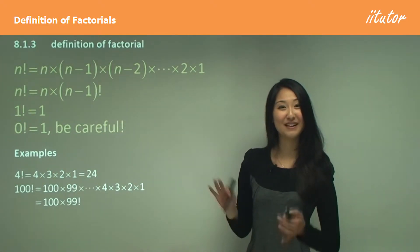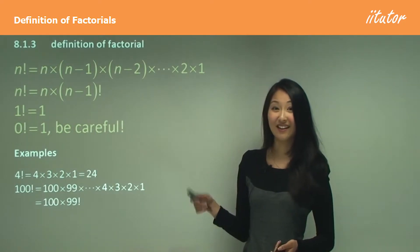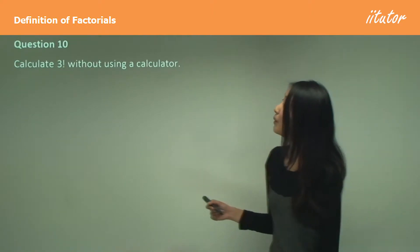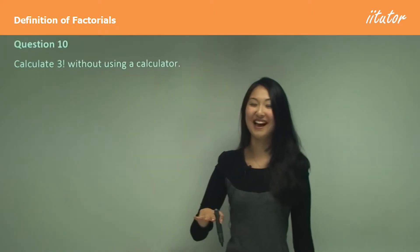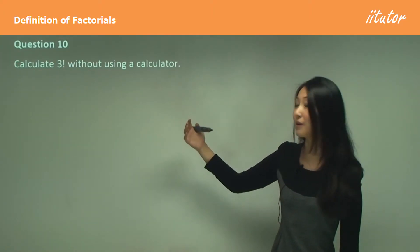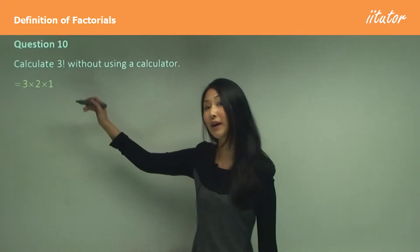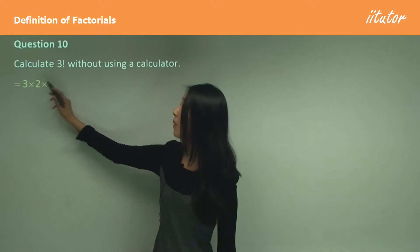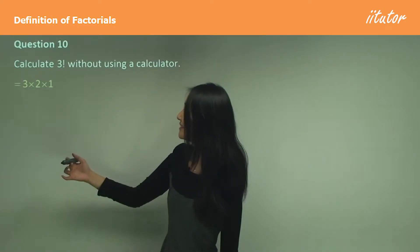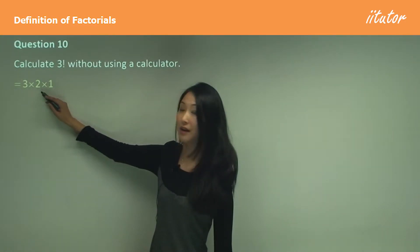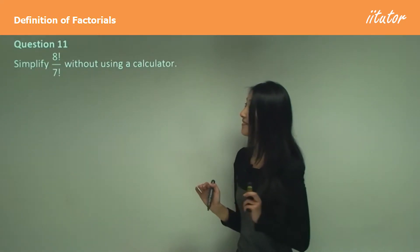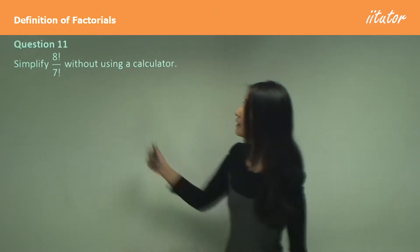Let's work through some questions together — it can be a bit confusing at first but these will cement the concept. Question 10: calculate 3 factorial without a calculator. Remember, 3 factorial means start with 3, then one number less which is 2, then 1. Once you reach 1 you stop. So it's 3 × 2 × 1, which equals 6.